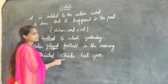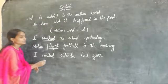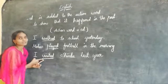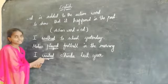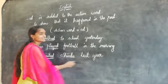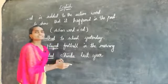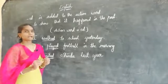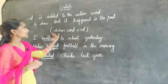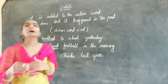I visited Shimla last year. Children, what is the action word in this sentence? Yes — 'visited.' We added '-ed' to 'visit.' The word 'visit' is an action word, and we added '-ed.' Why did we add '-ed'? Because I already visited Shimla last year. When did we visit? Last year — and last year means it already happened in the past. Did you understand where we should use '-ed'? Action word plus ed — ed is added to the action word to show that it happened in the past.